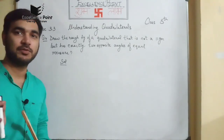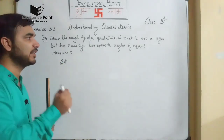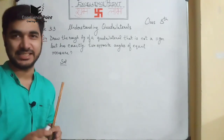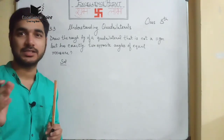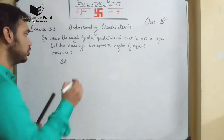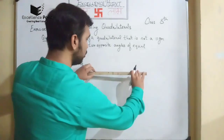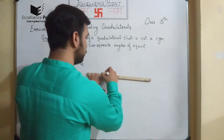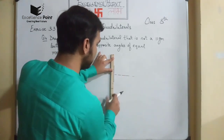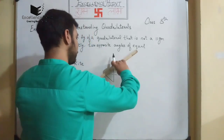In question number four, we have to draw a rough figure of a quadrilateral that is not a parallelogram but has exactly two opposite angles of equal measure. Yes it is possible — we have already discussed the kite, which is not a parallelogram but is a quadrilateral. So we draw a kite: first draw a baseline, then draw the upper side, then join, and you get the kite figure.